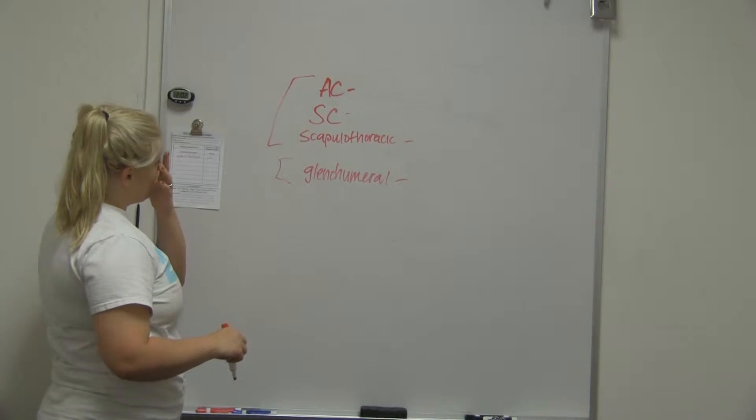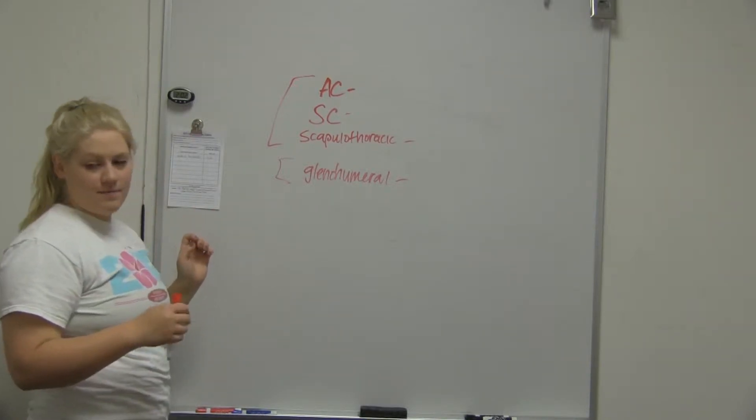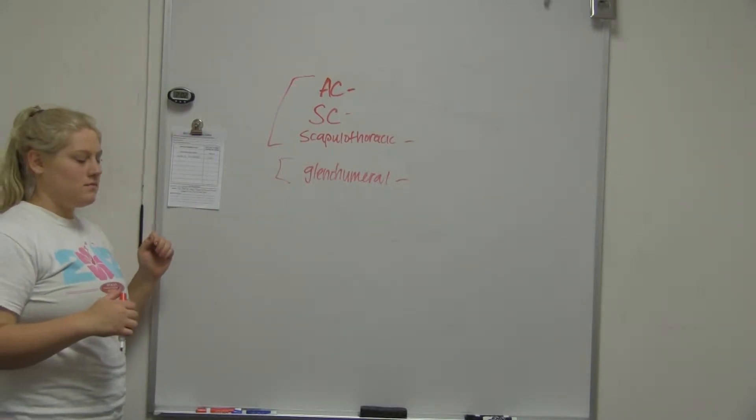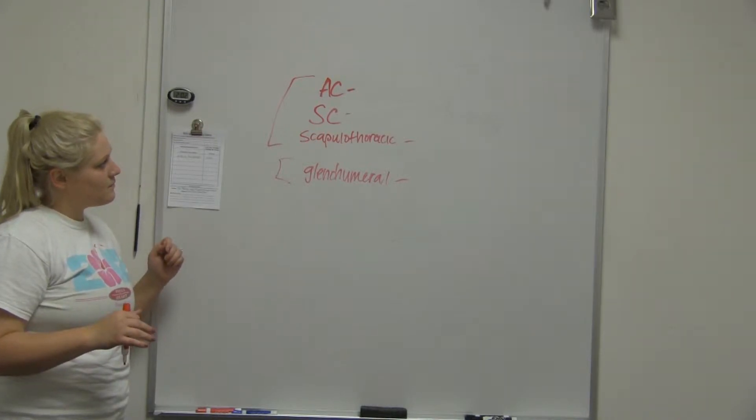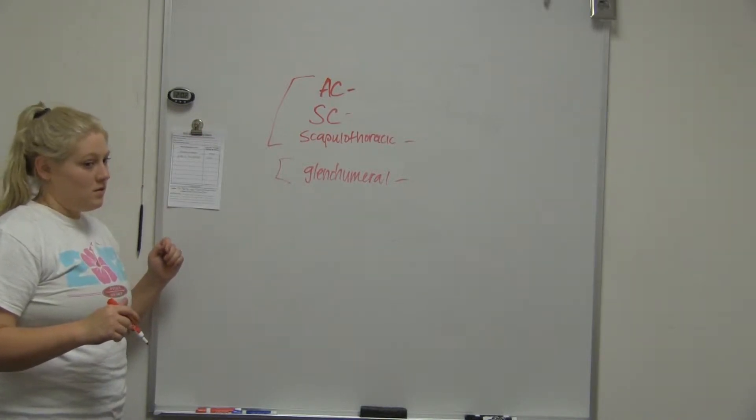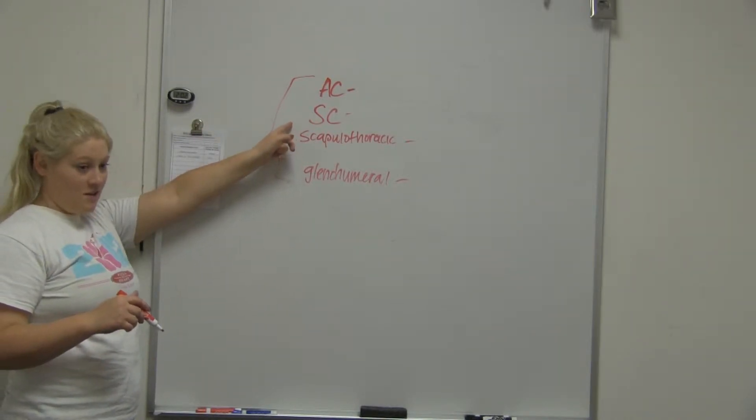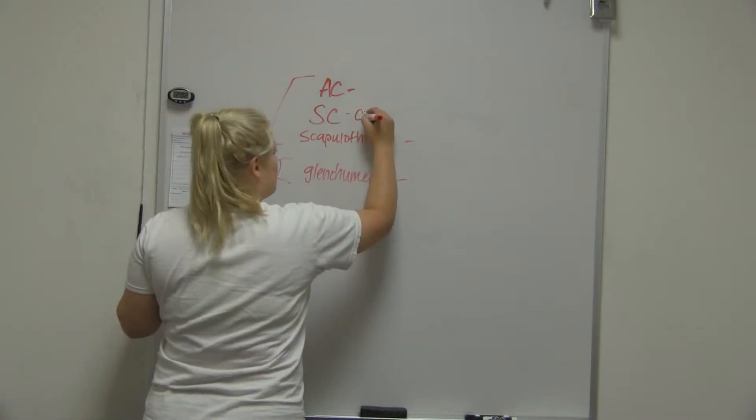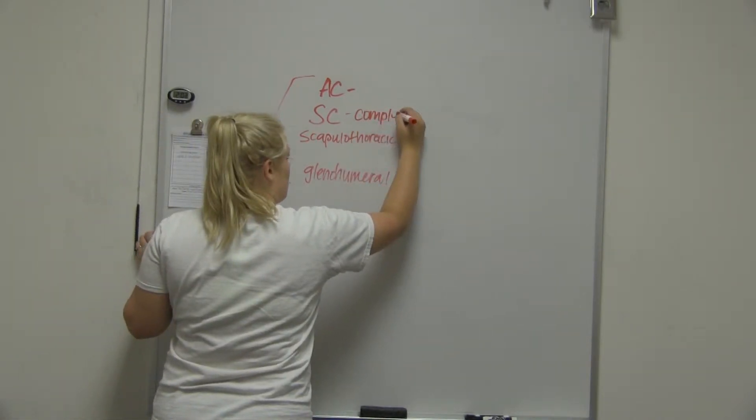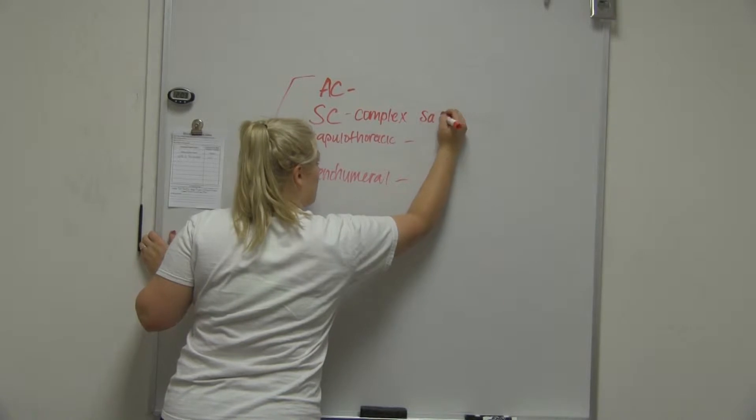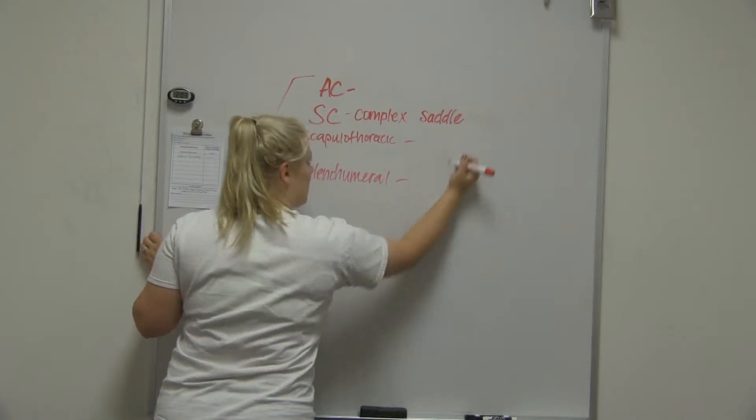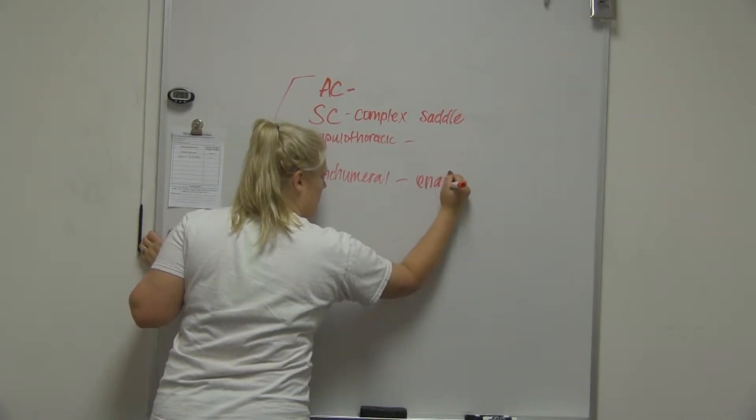What type of joint is the acromioclavicular joint? I know what the sternoclavicular is, it's a complex cell and the glenohumeral is just an arthrodial, an arthrodial ball and socket.